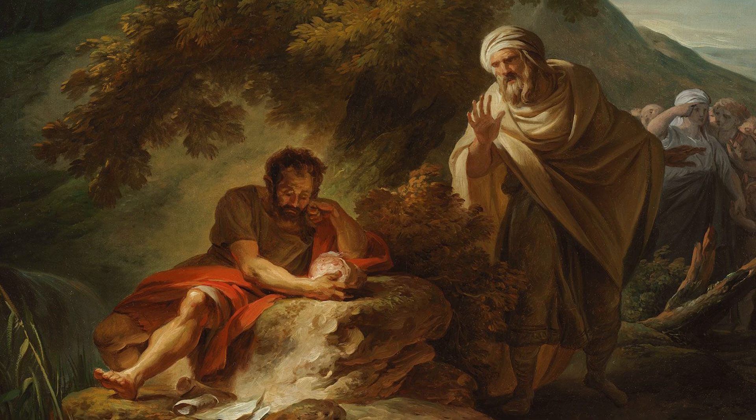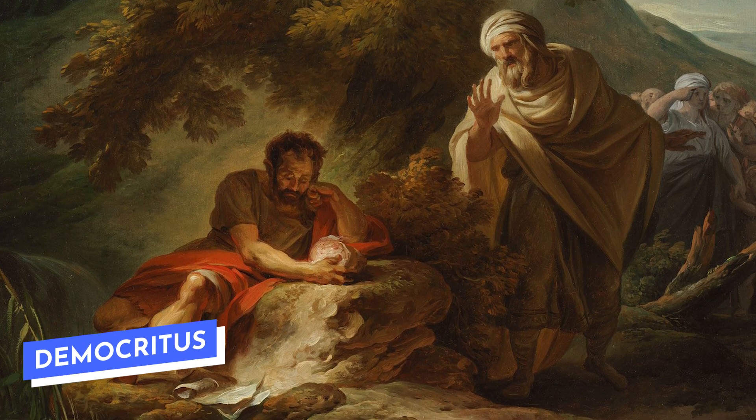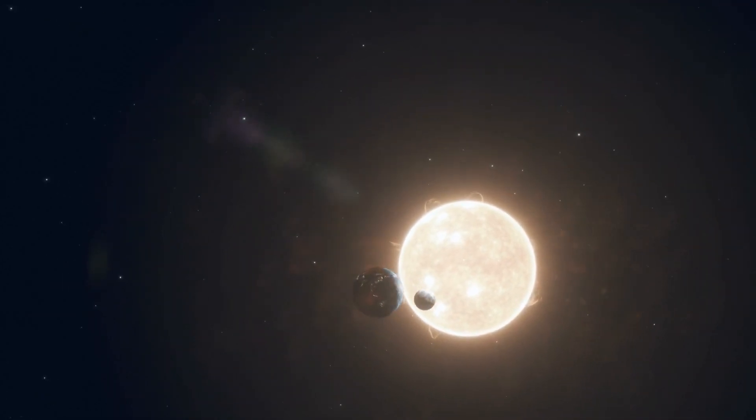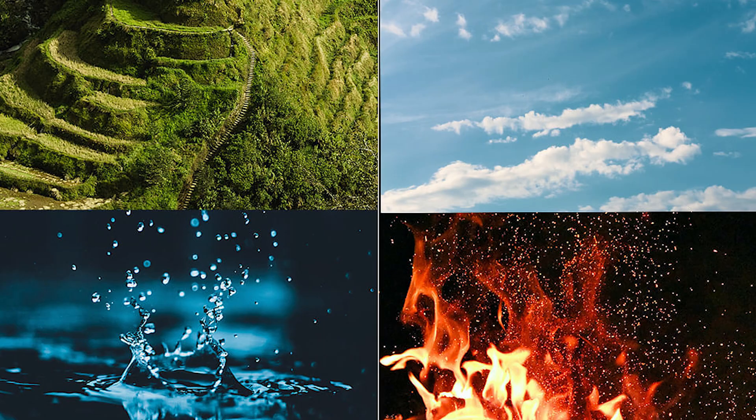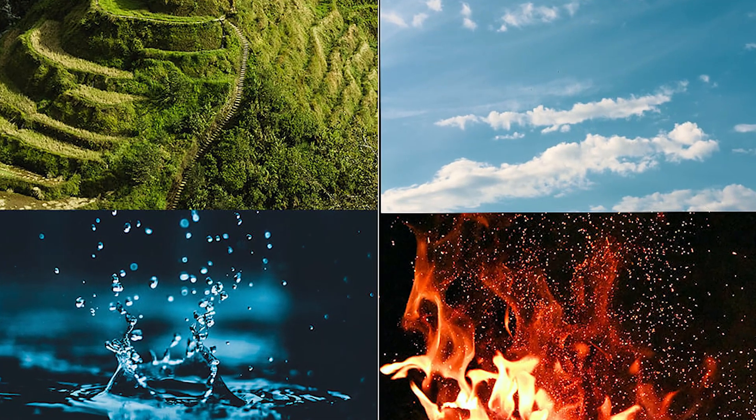Over 2,000 years ago, the Greek philosopher Democritus speculated that matter, instead of arising from combinations of earth, air, fire, and water, was built from tiny indivisible constituents.